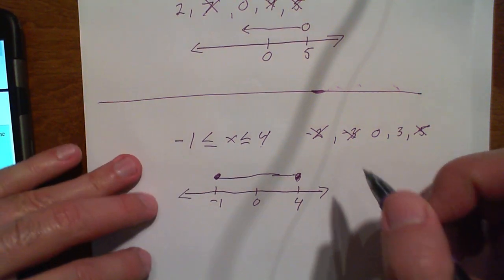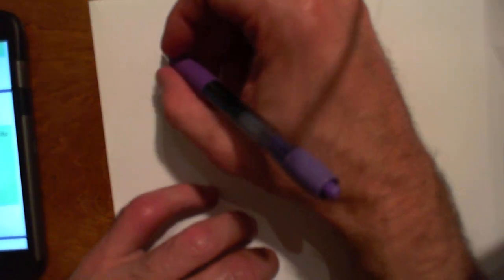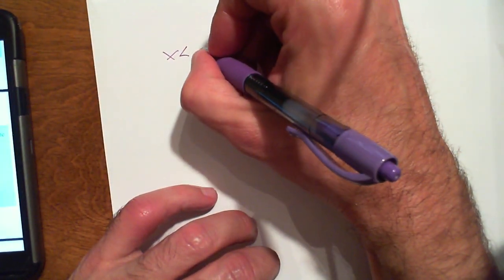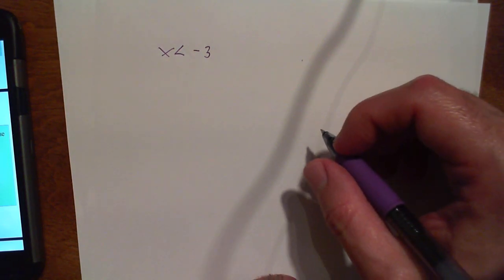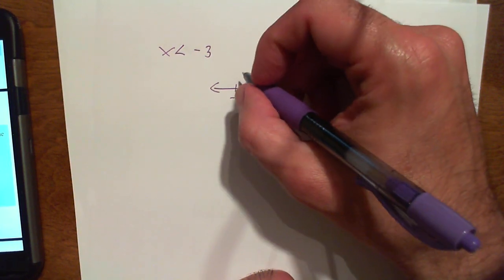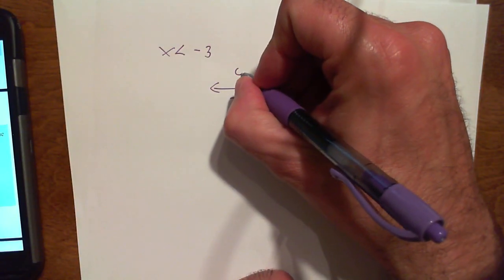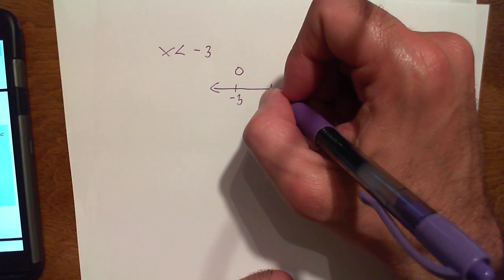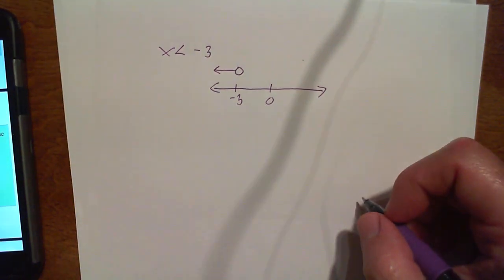Let's do a couple more for practice. Write a graphic representation on a number line that represents x is less than negative 3. Here's how I would write it: put 0 and negative 3 on the number line. x is less than negative 3, so I do an open circle above the negative 3, and less than means all the numbers going in this direction. If you did that, good job — that's what you're supposed to have.